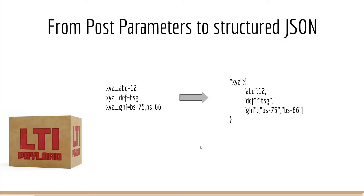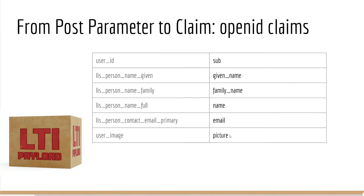Now let's look at the LTI payload itself. We're moving from POST parameters — key-value pairs — to an actual JSON representation, which allows nesting and structure. We can also use actual types and arrays, making it a more versatile representation. Outside of that, the data should be the same. In some LMSs they had to change the data, and we'll cover that later, but in the common path, the data remains the same — it's just a matter of knowing where it moved.